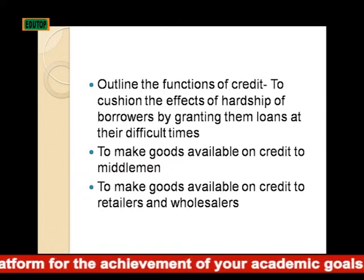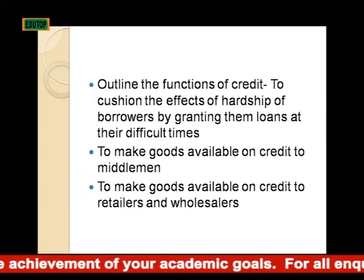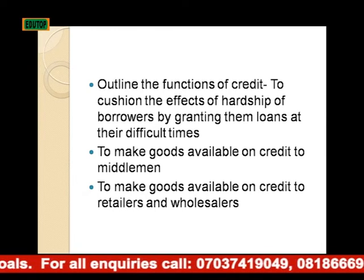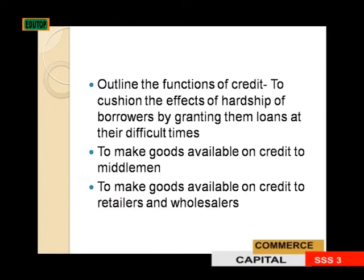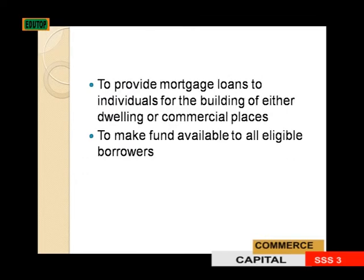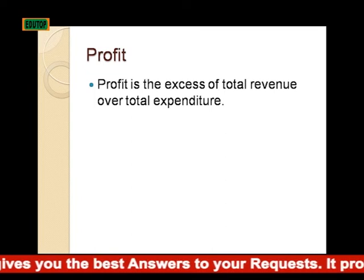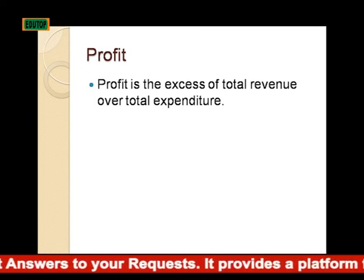Another question: outline the functions of credit. First, it cushions the effects of hardship of borrowers by granting them loans at their difficult times. It also makes goods available on credit to middlemen like wholesalers, and to retailers. It provides mortgage loans to individuals for the building of dwelling or commercial houses.